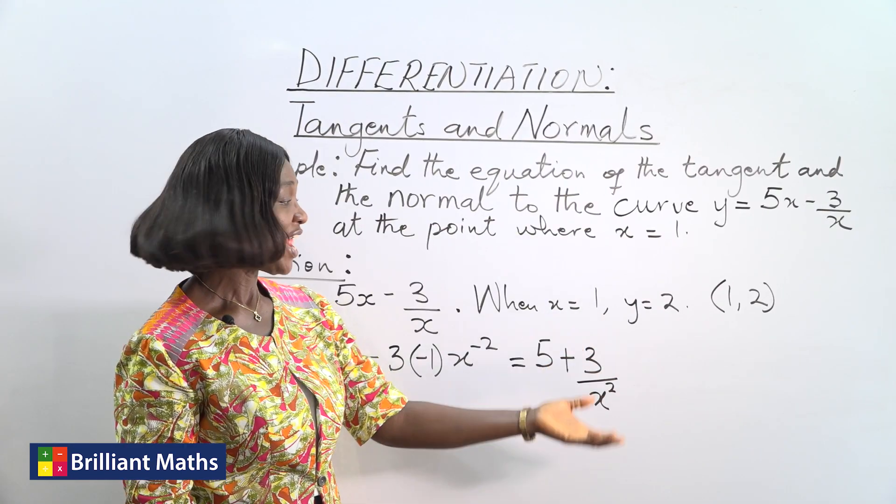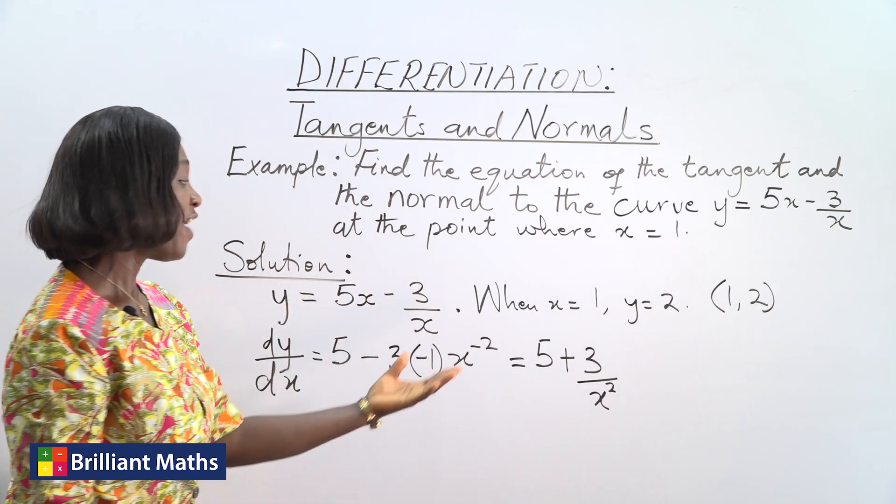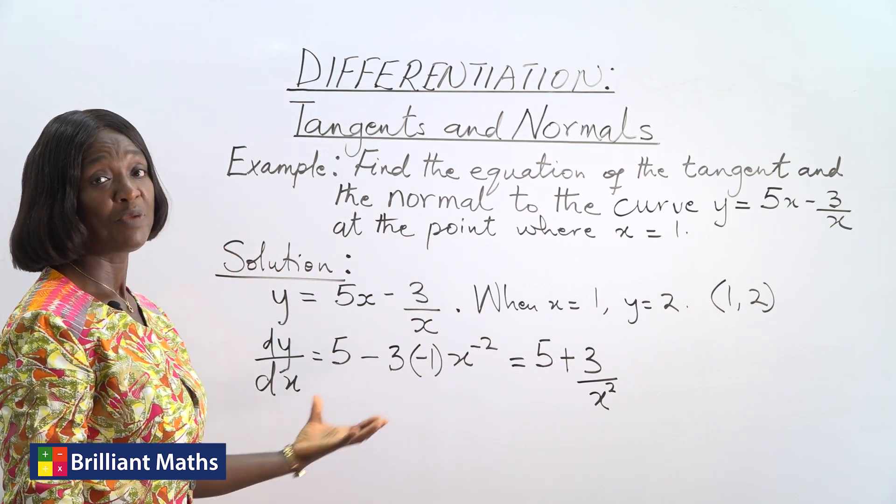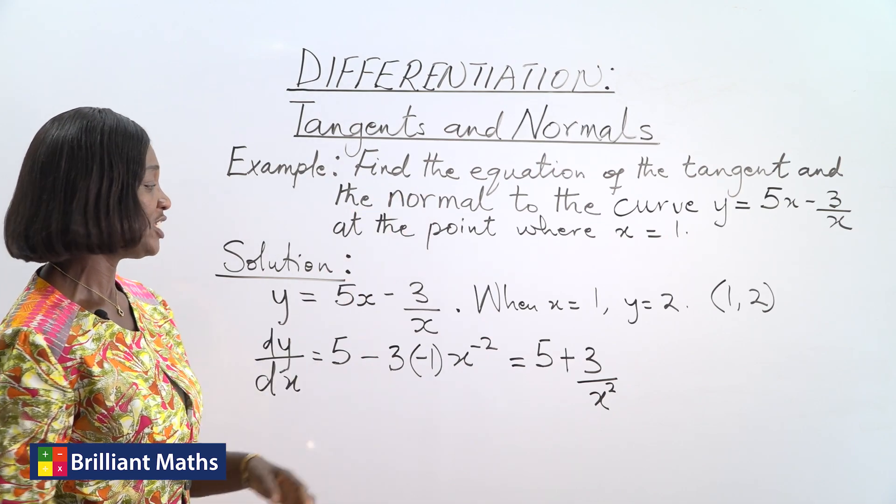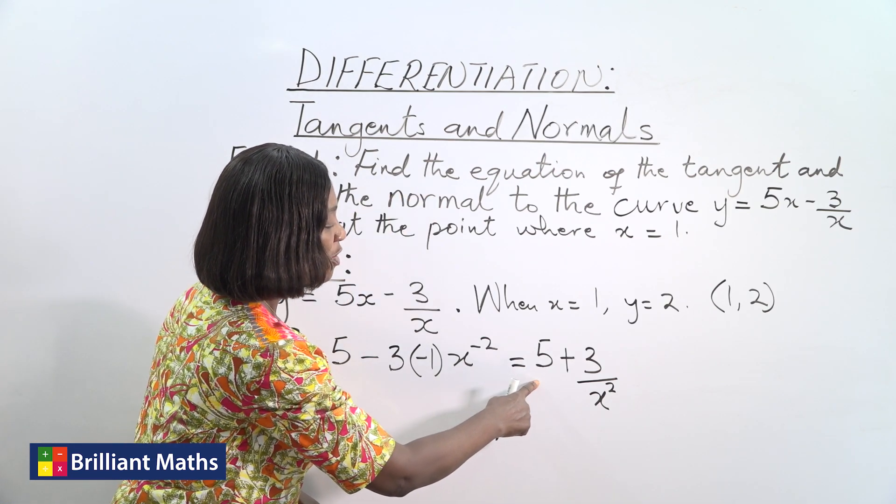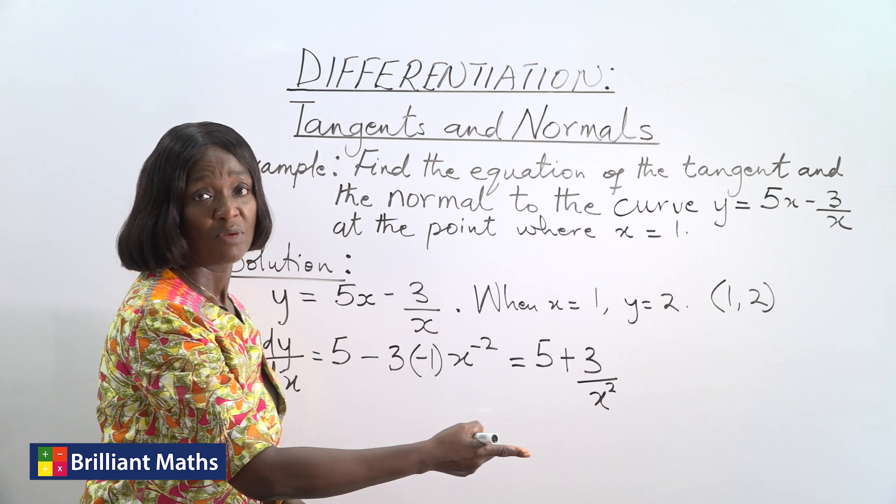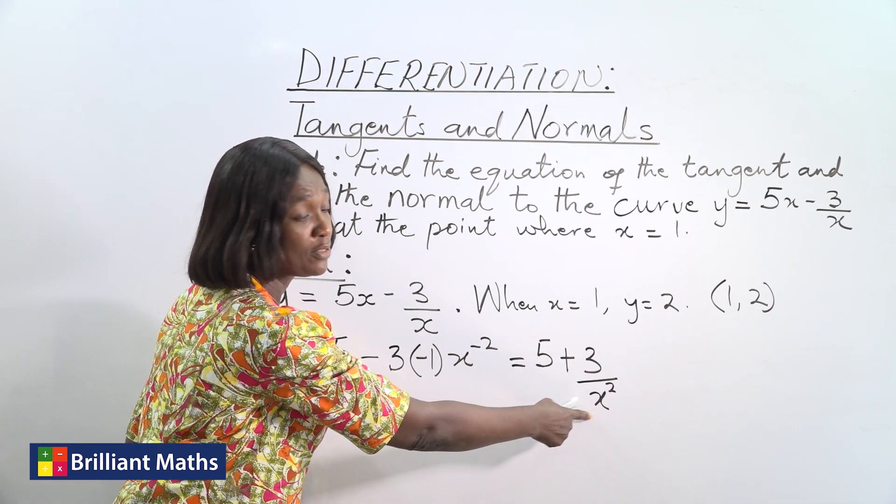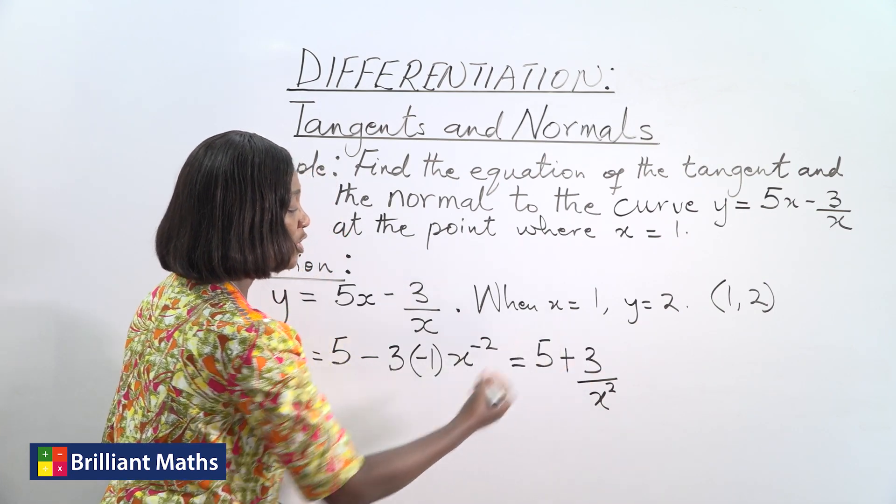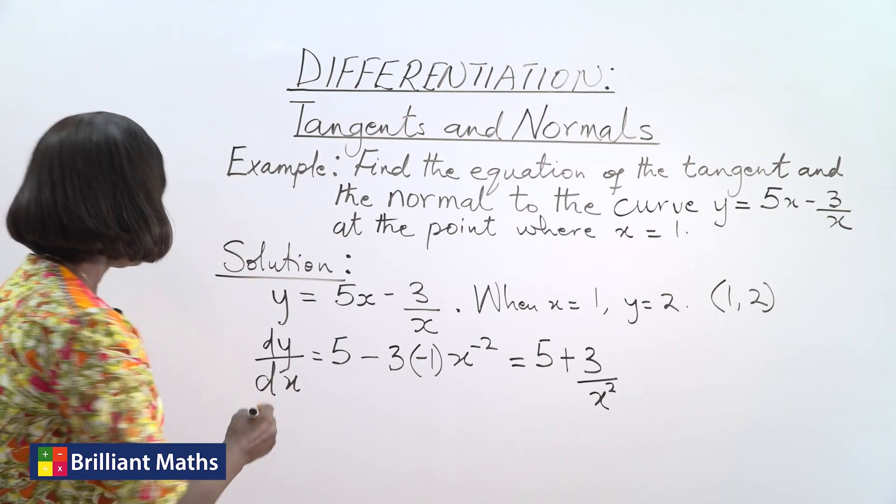So when x is 1 and y is 2, the value of dy/dx, which will be our gradient, the gradient of the tangent, will be 5 plus 3, which is 8, because the value of x is 1. So we substitute 1, 1 squared is 1, so the value will be 8. So gradient of tangent is equal to 8.